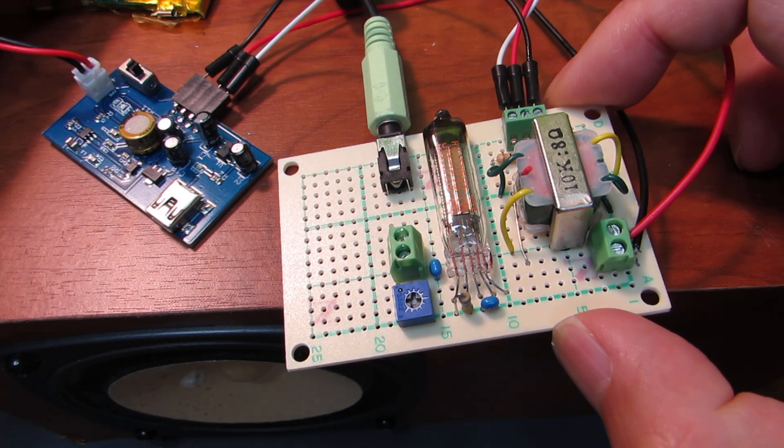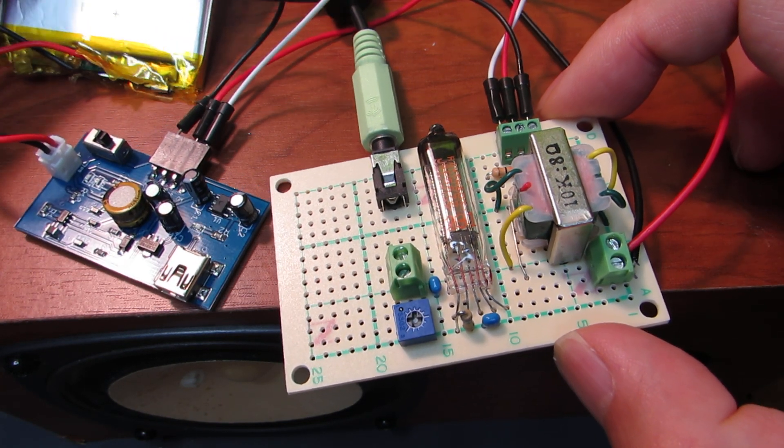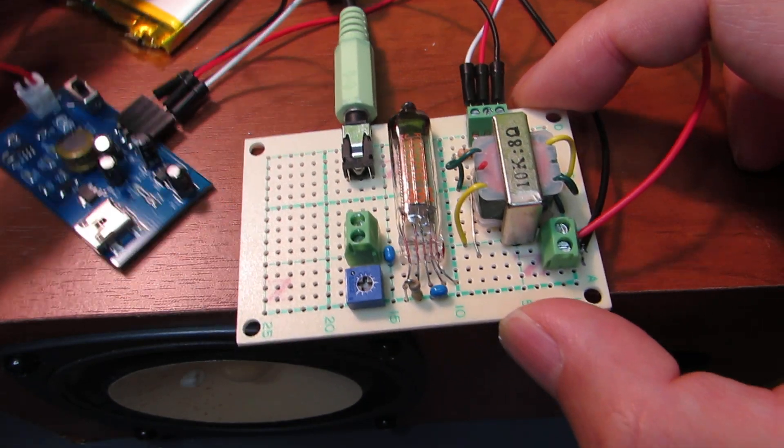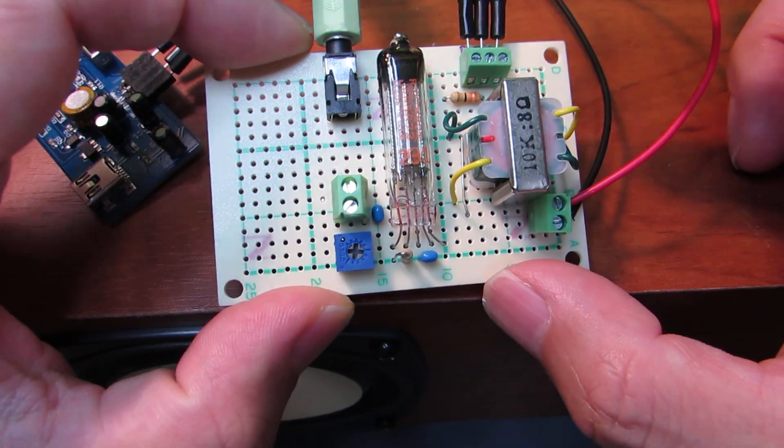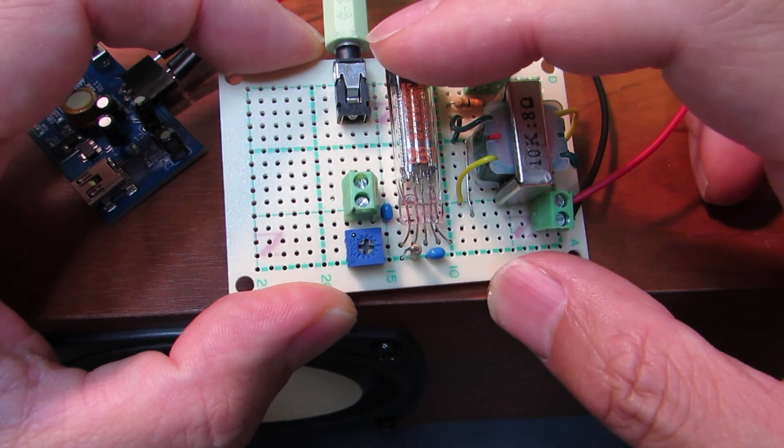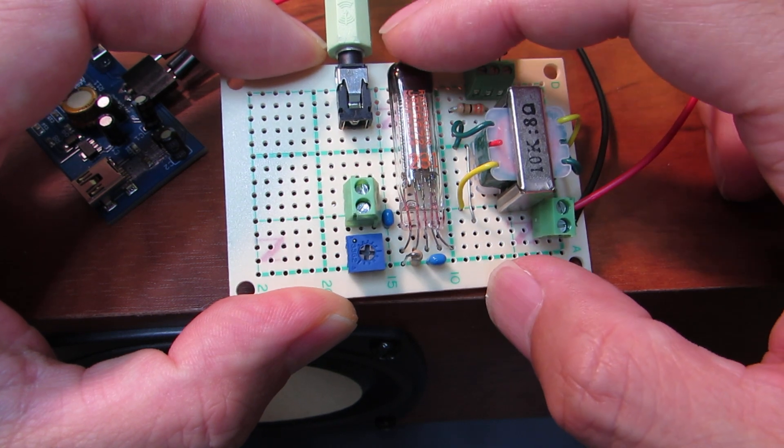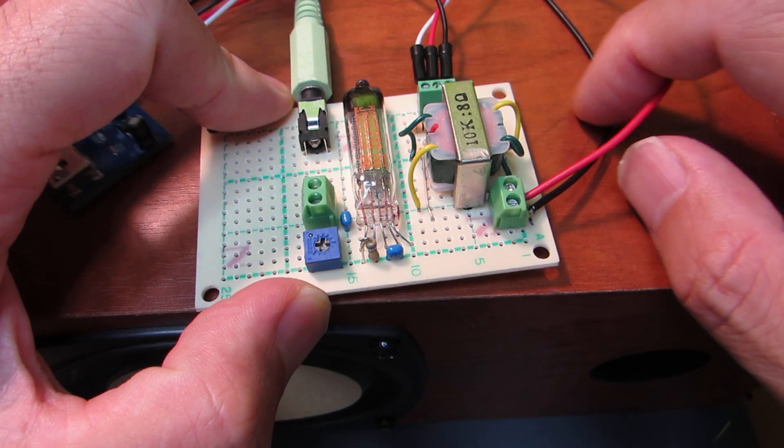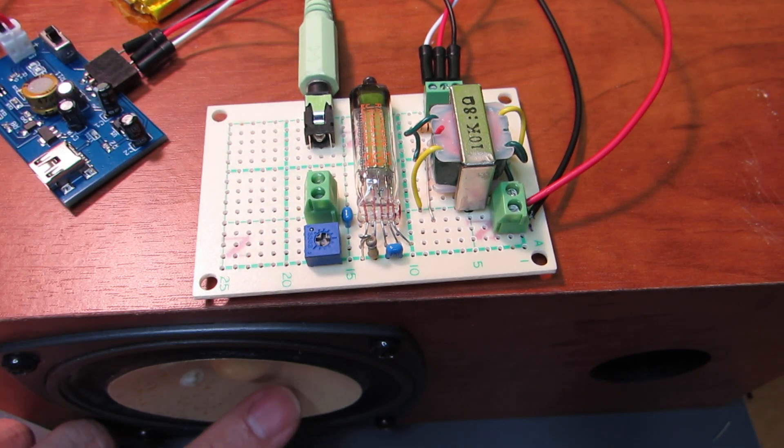It can generate the 30V and the heater voltage just from the lithium polymer battery. And the circuit is very simple: the input goes to the grid and amplifies, goes to the transformer, and finally goes to the external speaker.